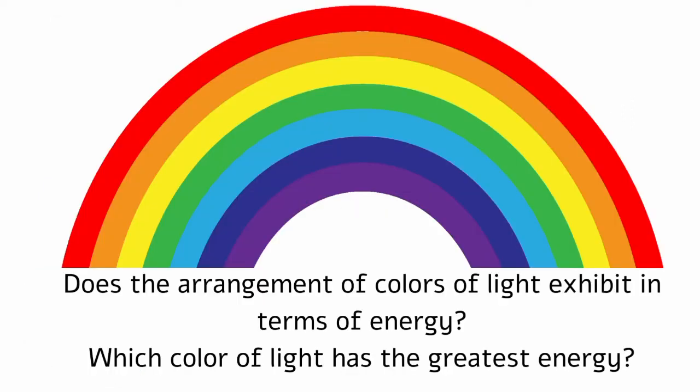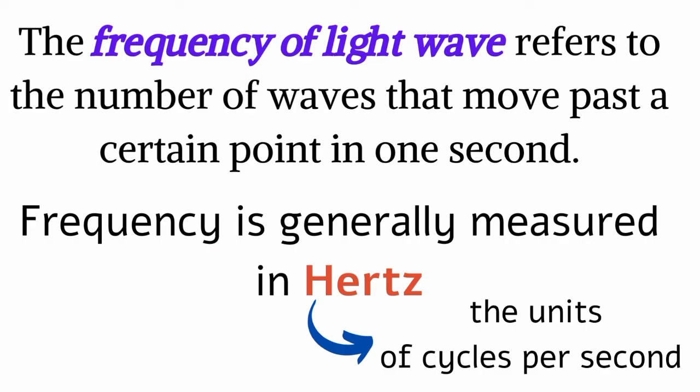Does the arrangement of colors of light exhibit in terms of energy? Which color of light has the greatest energy? The frequency of light wave refers to the number of waves that move past a certain point in one second. Frequency is generally measured in Hertz, the units of cycles per second.